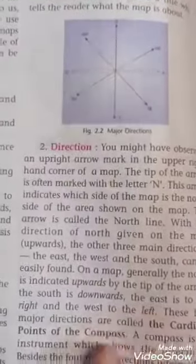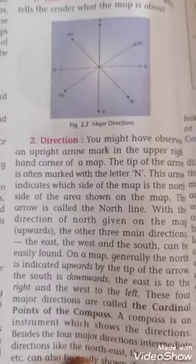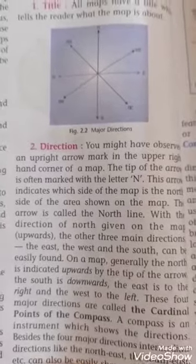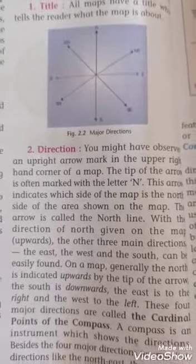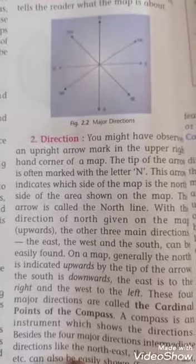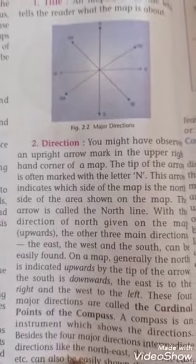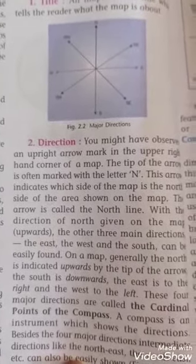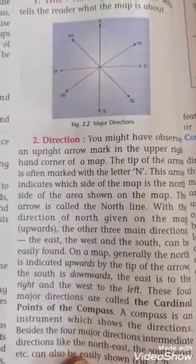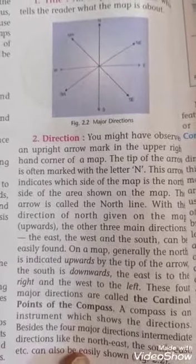So this arrow indicates which side of a map is the north side of the area shown on the map. This arrow is called the north line. With the direction of north given on the map, the other three main directions east, west and south can be easily found.